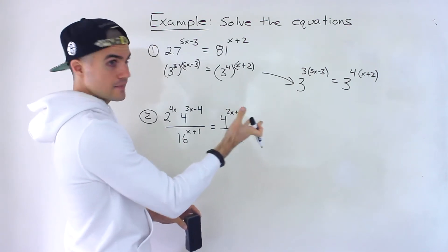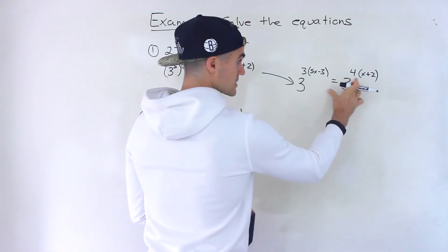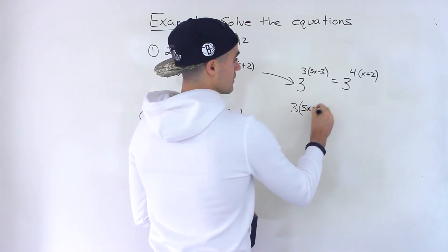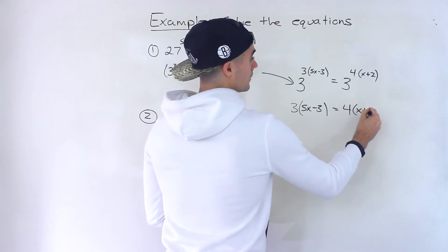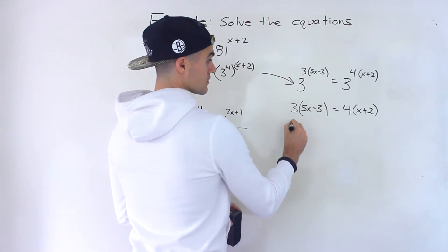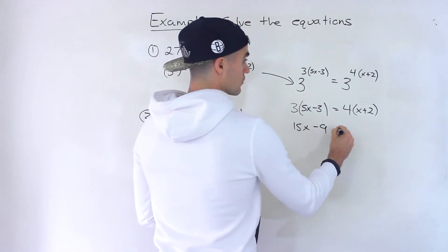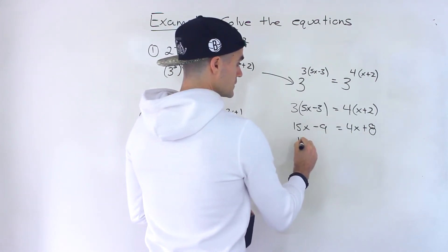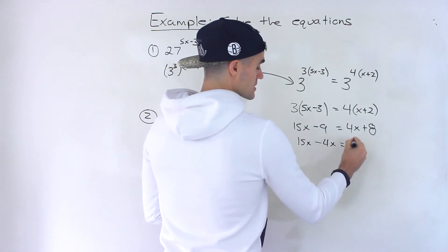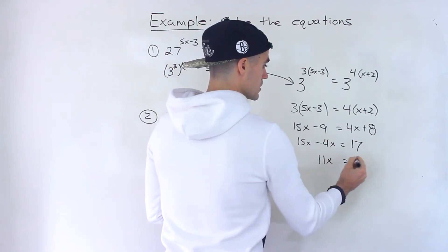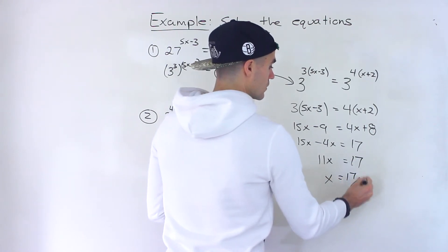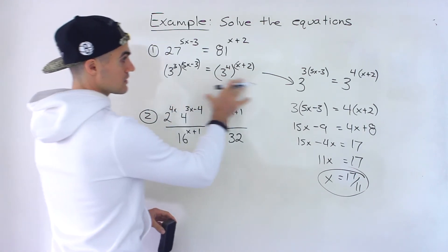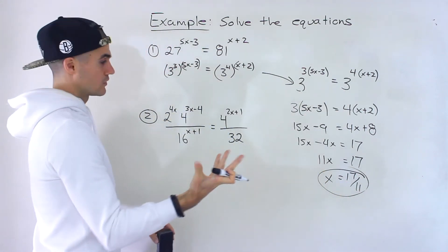Now we have it in the format we wanted — one exponential expression on each side with the same base — so we can drop the base. At this point, we just have to solve. Distributing the 3 and the 4, then bringing terms over, we'd have 15x minus 4x equals 8 plus 9, which is 17. So 11x equals 17, meaning x equals 17 over 11. That would be the answer to number one: take the equation, put it in this format, drop the bases, then solve.